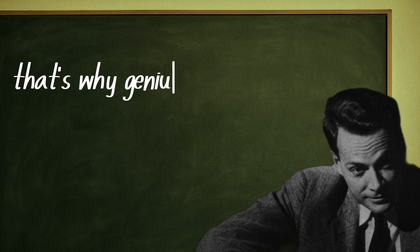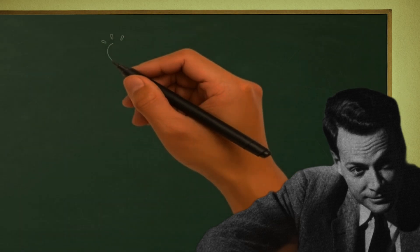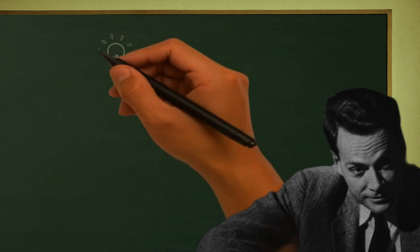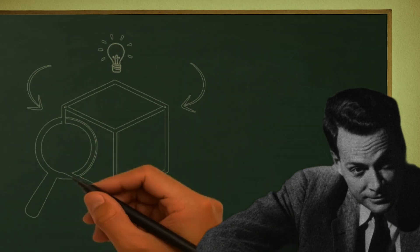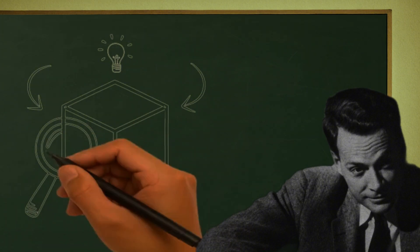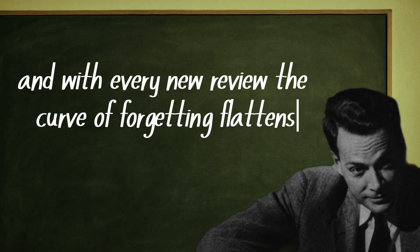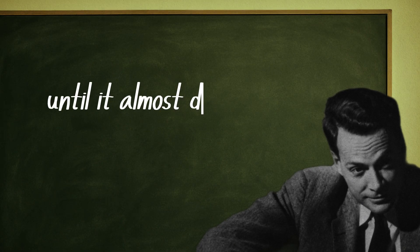That's why geniuses don't study longer, they study smarter. They turn every repetition into a new experiment. They don't review, they rediscover. Each time they revisit an idea, they try to see it from a new angle, a new context, a new question. And with every new review, the curve of forgetting flattens until it almost disappears.